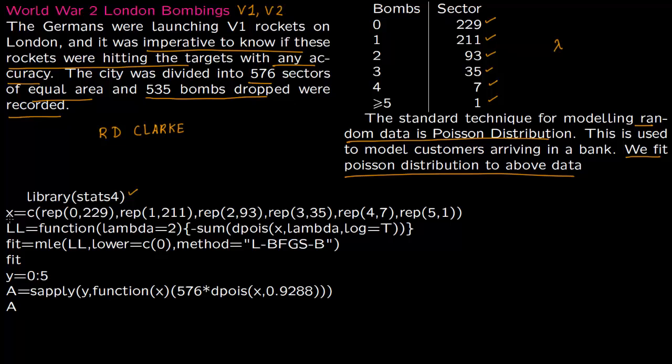The library is stats4. First we feed in the data, so you have 229 sectors with zero bombs, so zero is repeated 229 times. Then you repeat one 211 times because one bomb fell on 211 sectors. Then 93 sectors received two bombs, 35 sectors received three bombs, and so on.